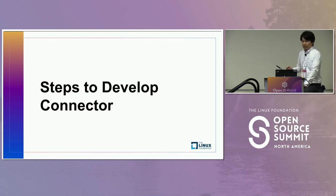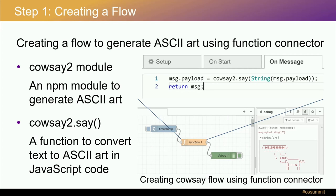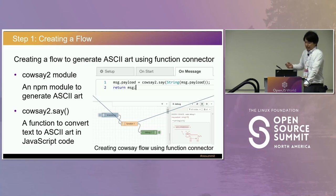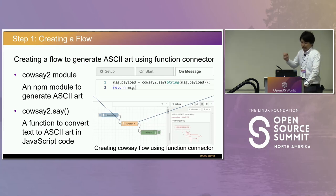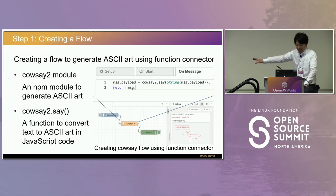From this slide, I will explain 10 steps to create custom Node-RED connectors. In the first step, I created a flow as usual. In this example, I defined a flow to generate ASCII art using the figlet2 module available on npm.js. In the setup tab of the function connector, I entered figlet2 as the module name. On the message tab, I wrote a short JavaScript to use the figlet2 module. Once I clicked the inject connector button, the function connector generated the ASCII art and passed it to the debug tab. We can see the figlet ASCII art on the screenshot.